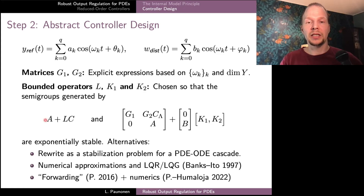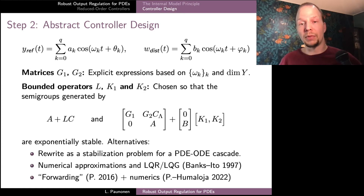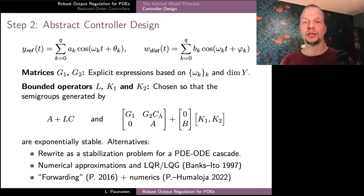Alternatively, more generally, even for non-parabolic systems, it's possible to explicitly stabilize the cascade system using the so-called forwarding approach, which deals with stabilization of cascades. As shown in our very recent work with Jukka-Pekka Humaloja, it's also possible to combine numerics with the forwarding approach to reduce this stabilization to solving a finite number of boundary value problems related to the original PDE system. Once these parameters are chosen, we have an abstract controller.